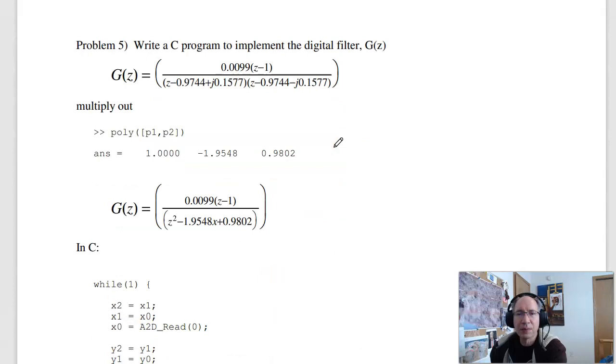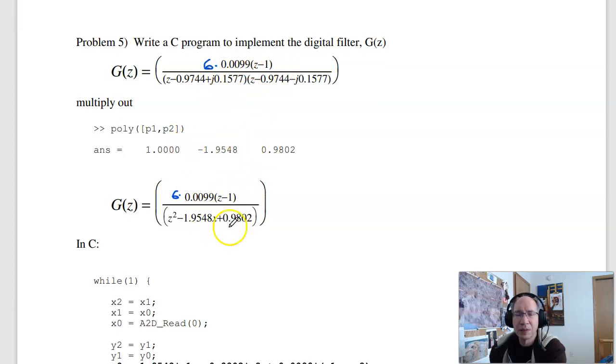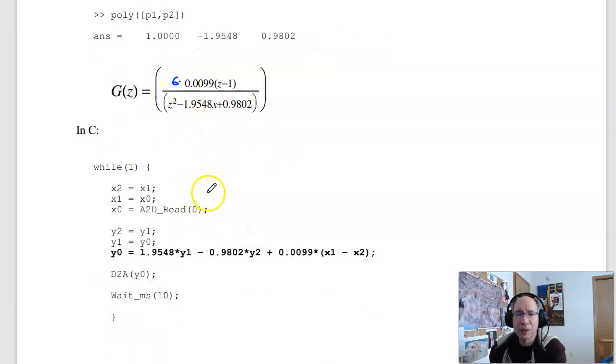Problem five. Write a C program to implement that filter. It looks like I forgot the six. To do that, I'll multiply this out. Cross multiply, and here times six. And I forgot that six for some odd reason.